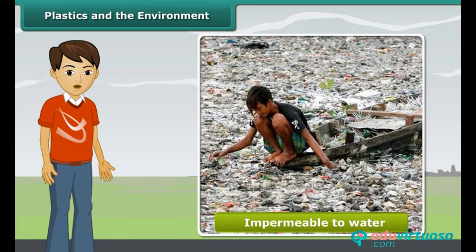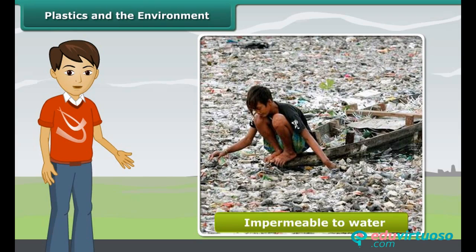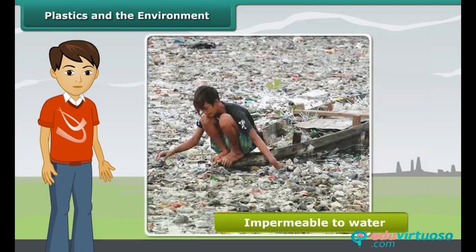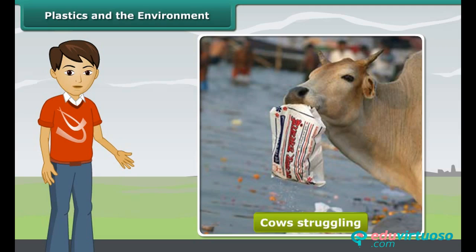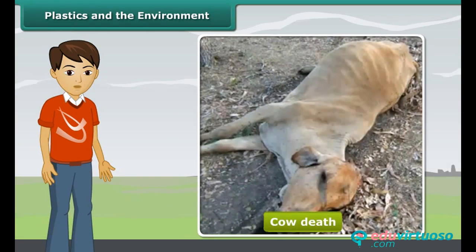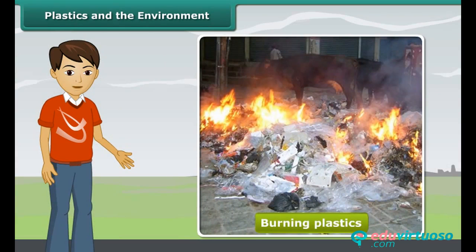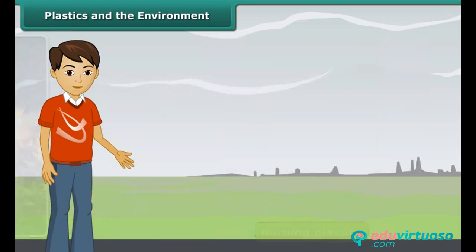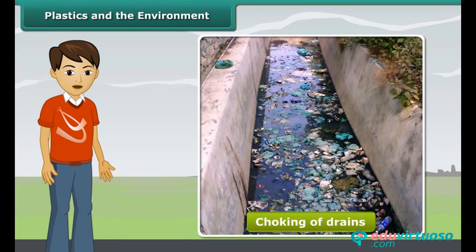Also, as plastics form a cover on the ground surface and are impermeable to water, rain water would not be absorbed into the soil, thus diminishing our underground water reservoirs. Cows end up eating plastic bags thrown near garbage heaps, which can choke their respiratory tract or form a lining in their stomachs causing their death. On burning plastics, toxic fumes are released into the atmosphere. Another plastic menace is the choking of drains, which leads to their overflowing and flooding during the rains.